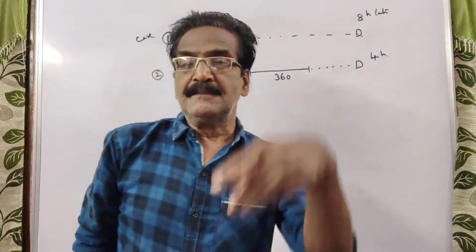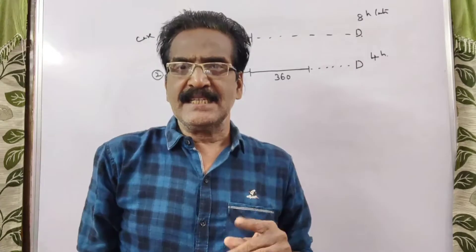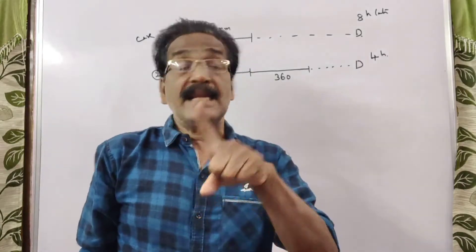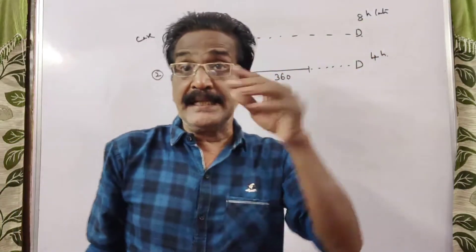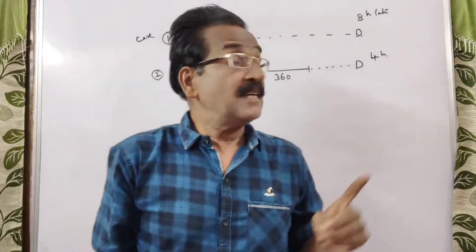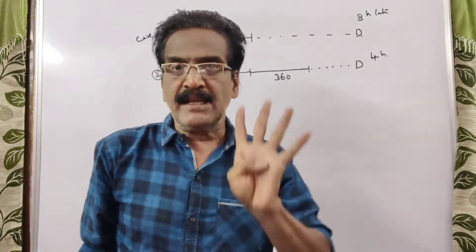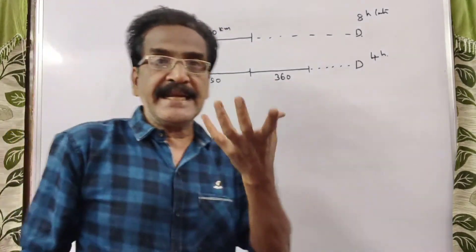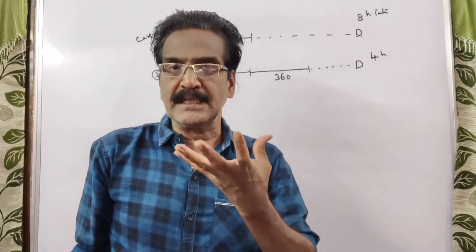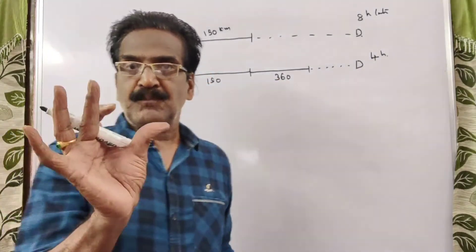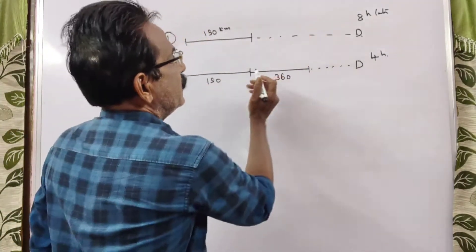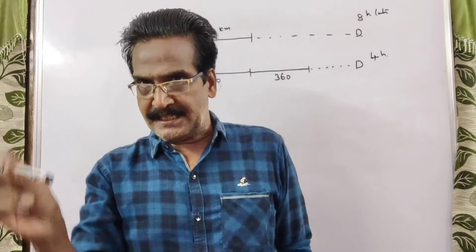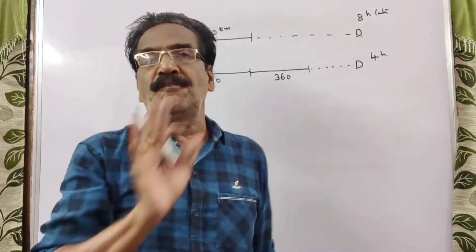That means in the second case, it gained 4 hours. Earlier it was late by 8 hours, now it is late by only 4 hours. So it gained 8 minus 4 = 4 hours. This means the time difference to travel this 360 km with original speed and reduced speed is equal to 4 hours.